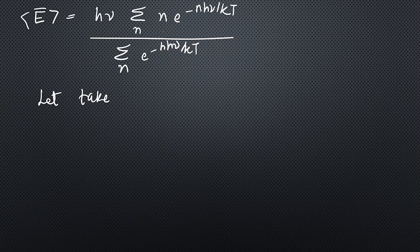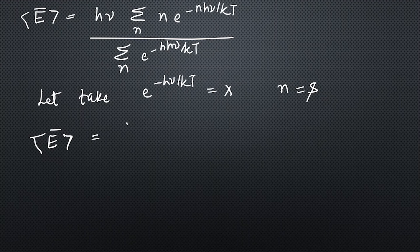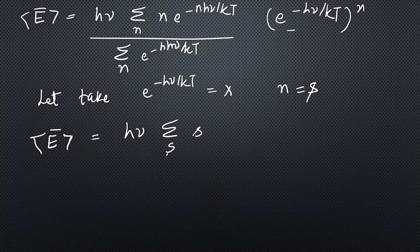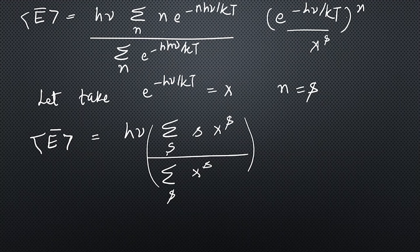Let's take x = exp(−hμ/kT) and n = s, so we rewrite the average energy expression in terms of x and s. This gives: hμ · [Σ s · xˢ] / [Σ xˢ]. Let's evaluate the numerator and denominator separately.